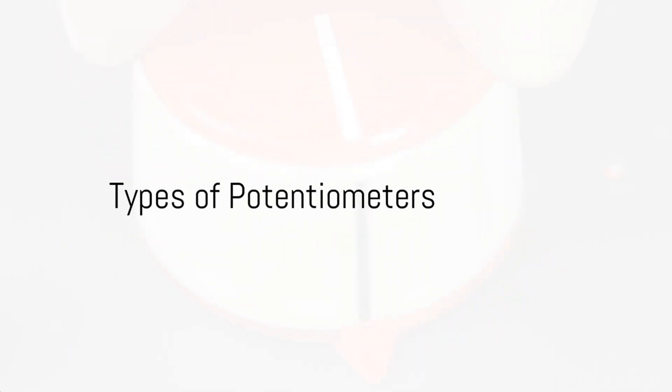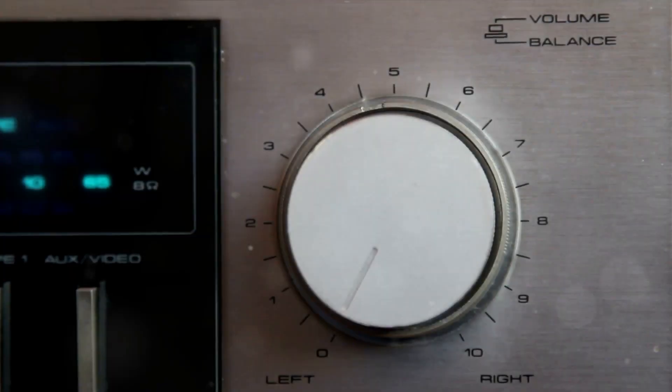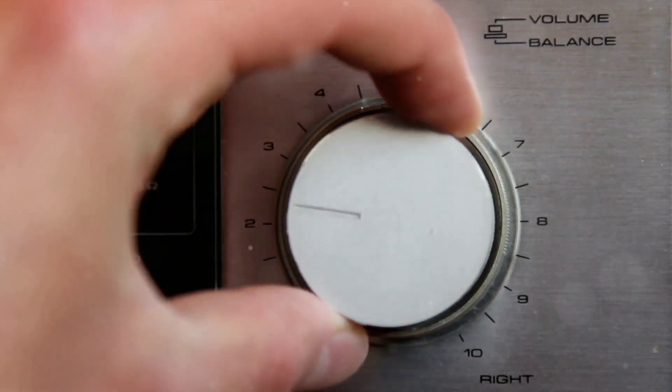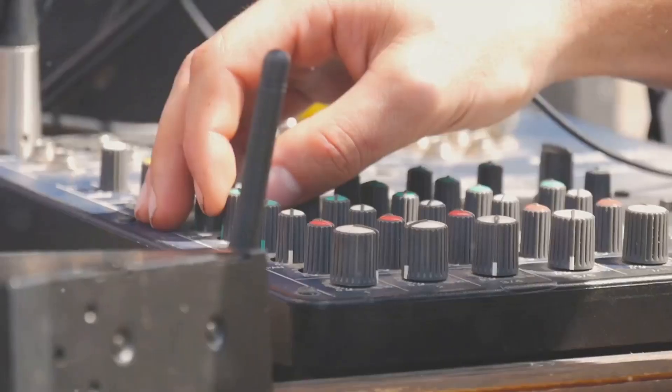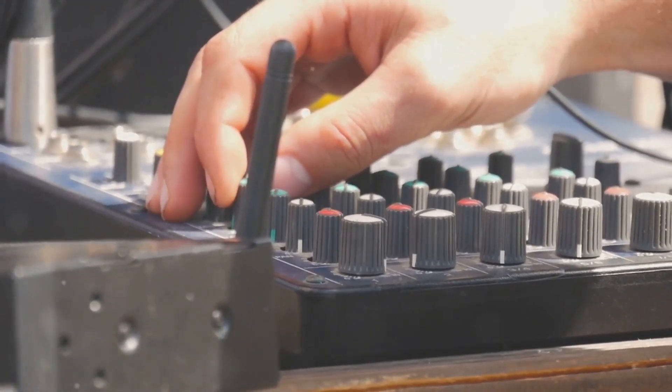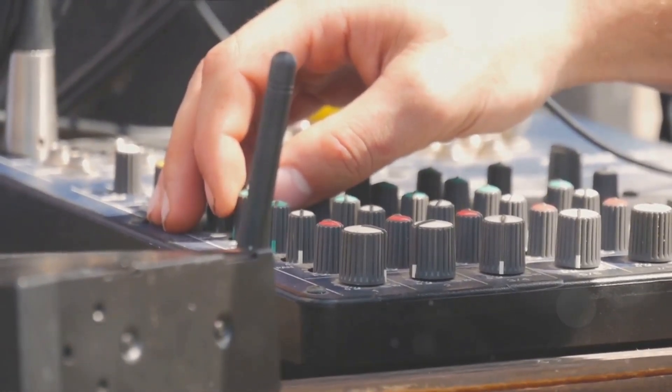There are two main types of potentiometers, rotary and linear. The rotary type is what you'd find on a volume dial, where you twist the knob to change the resistance. The linear type, on the other hand, involves sliding the wiper along a straight track, much like a fader on a sound mixing board.